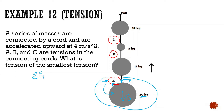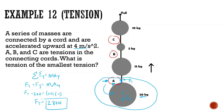The sum of all forces in the Y equals mass times acceleration in the Y. We have force of tension plus force of gravity equals mass times acceleration. Force of tension is unknown. Force of gravity is going down: 20 times 10 equals minus 200. This equals the object mass of 20 times the acceleration of 4 meters per second squared. Doing the algebra, we get approximately 280 Newtons, or 276 if you use 9.8.